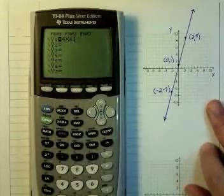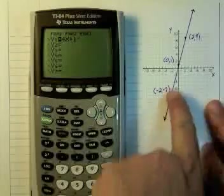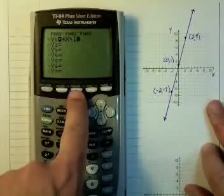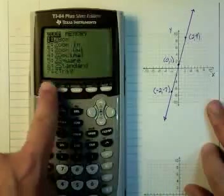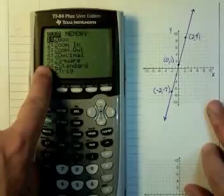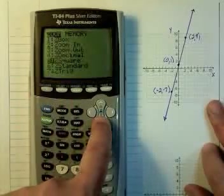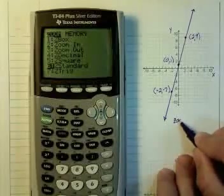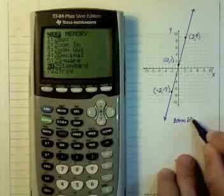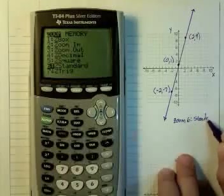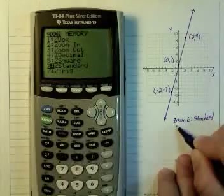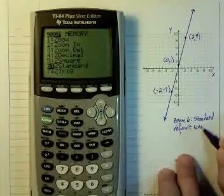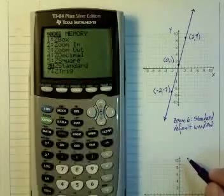If I want to graph on the same window that I'm given in my own graph that I generated here by hand, I'm going to press the zoom, and zoom standard will give me what's called the default window. So let's write that here. Zoom 6 standard will give me the default window, which is negative 10 to 10.